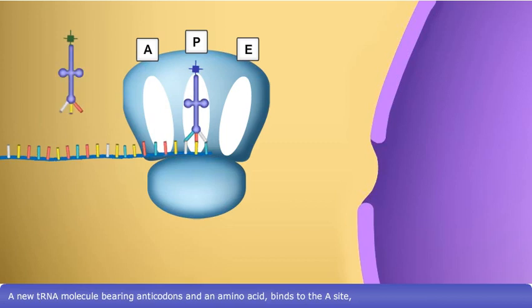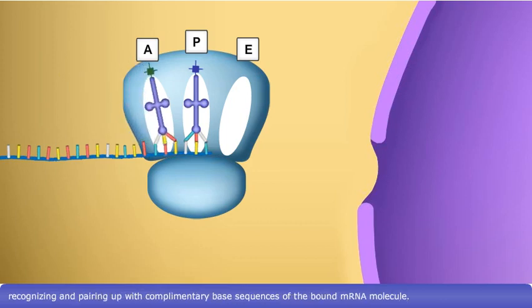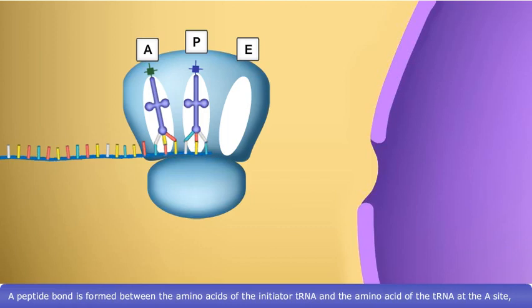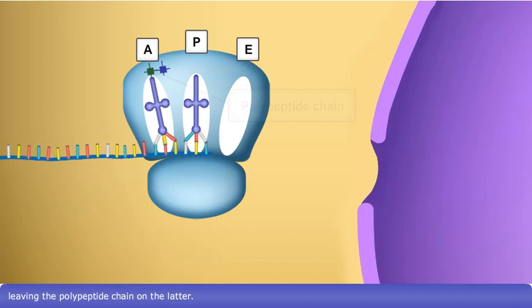A new tRNA molecule bearing anticodons and an amino acid binds to the A site, recognizing and pairing up with complementary base sequences of the bound mRNA molecule. A peptide bond is formed between the amino acids of the initiator tRNA and the amino acid of the tRNA at the A site, leaving the polypeptide chain on the latter.